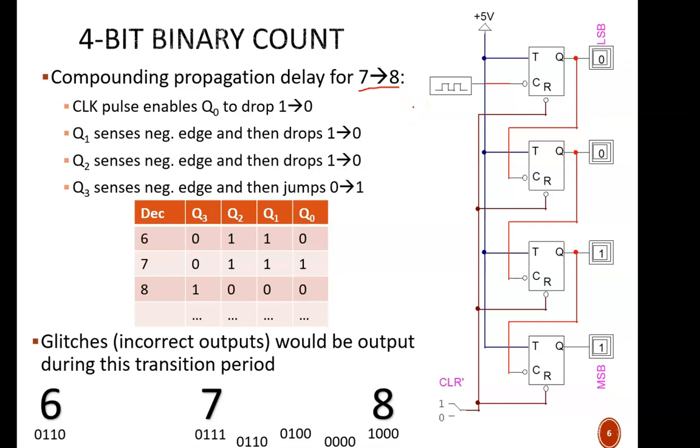At decimal 7, these binary values would read 0, 1, 1, 1. Then, on the next clock cycle, Q0 toggles like it always does. This 1 changes to 0, and for a brief moment, the count reads 0, 1, 1, 0, or decimal 6.